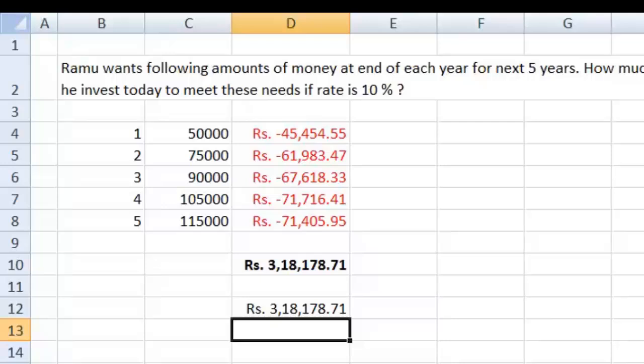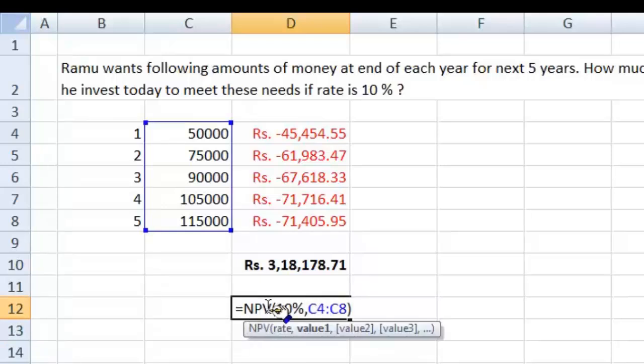Now let's change this question a little bit and then see what happens. In this question we were supposed to calculate assuming that these amounts were required at end of each year. What if these amounts are required at beginning of each year? NPV function has one crucial shortcoming. NPV function, unlike a regular PV function, doesn't have any type column. It just has two data points: rate and values.